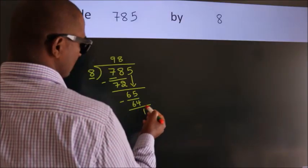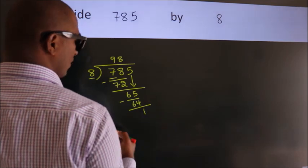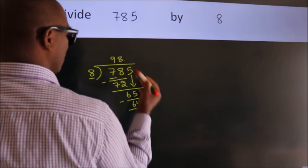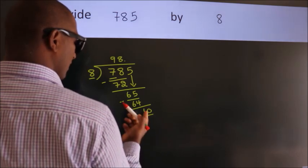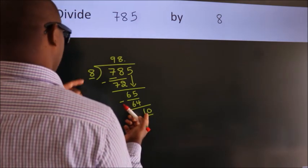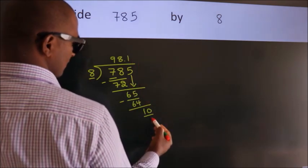After this, no more numbers to bring it down. So what we do is, we put dot take 0. So 10. A number close to 10 in 8 table is 8 once, 8.